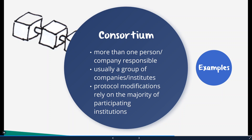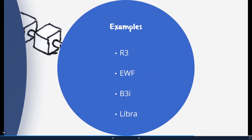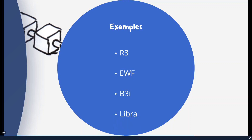Furthermore, voting within the consortium prevents wrong decisions or fraudulent activities by individual participants, since a defined majority decision must be present. Examples of consortium blockchains include R3, EWF, B3i, and also the Facebook Libra Association.